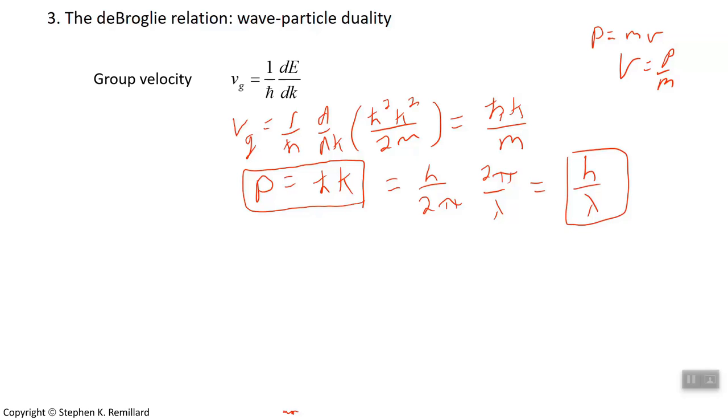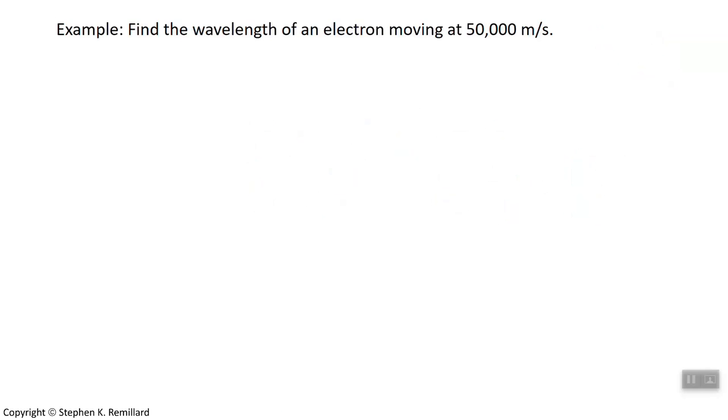Let's do a quick little example. Let's find the wavelength of an electron that's moving at 50,000 meters per second. λ is Planck's constant over momentum. I'll go ahead and replace momentum with mv, m sub e for the mass of the electron. And we're dealing with a free electron, so I'm not going to deal with anything but the free electron mass.